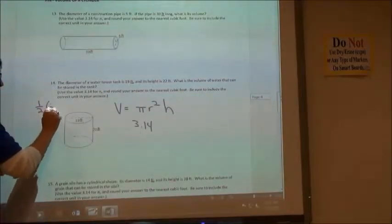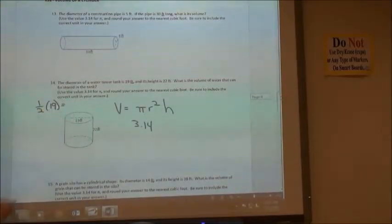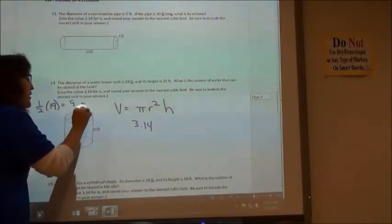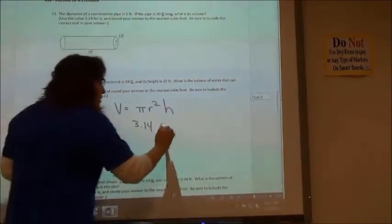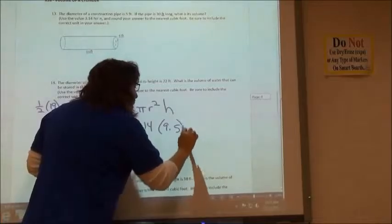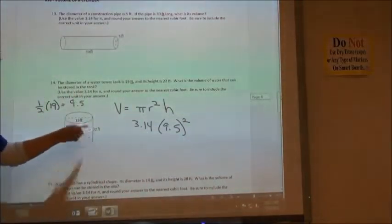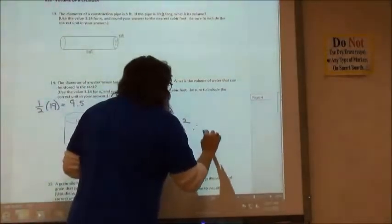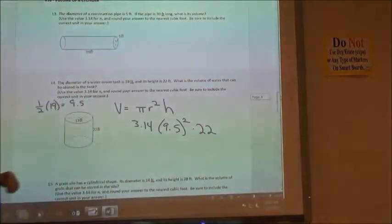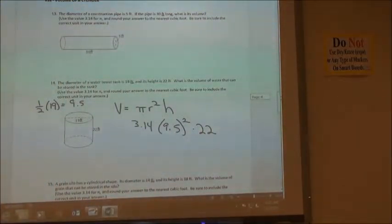So if we take half of 19, we get what? 9.5, right? Since we're probably using our calculator, we'll use 9.5. So 9.5 squared, and then times the height, and the height is 22. So 3.14 times 9.5 squared times 22.